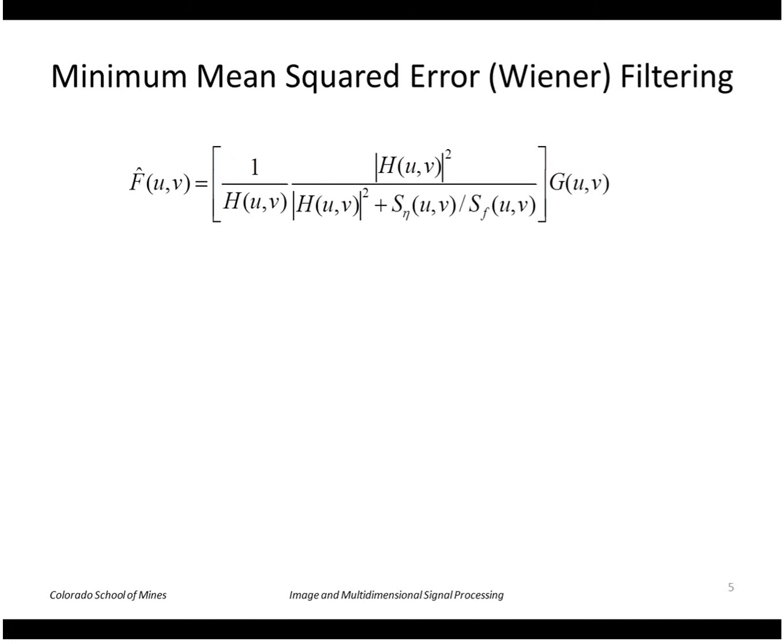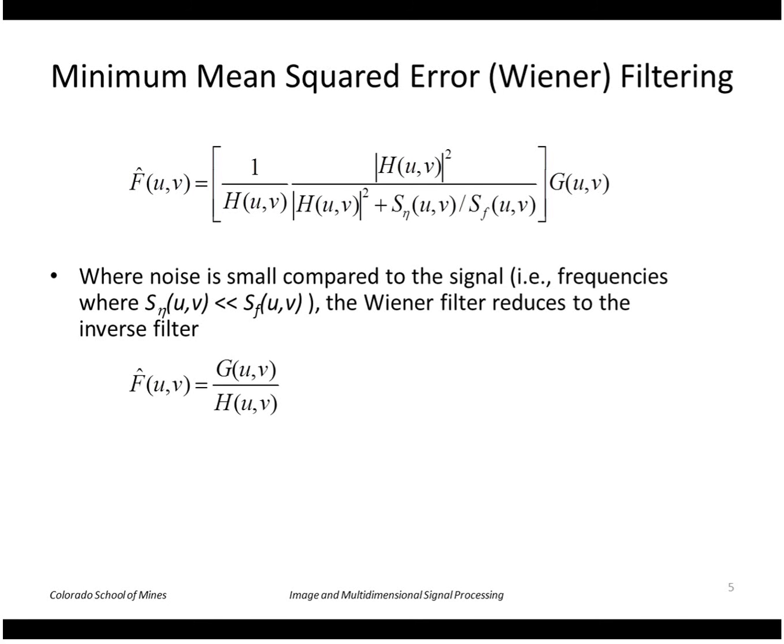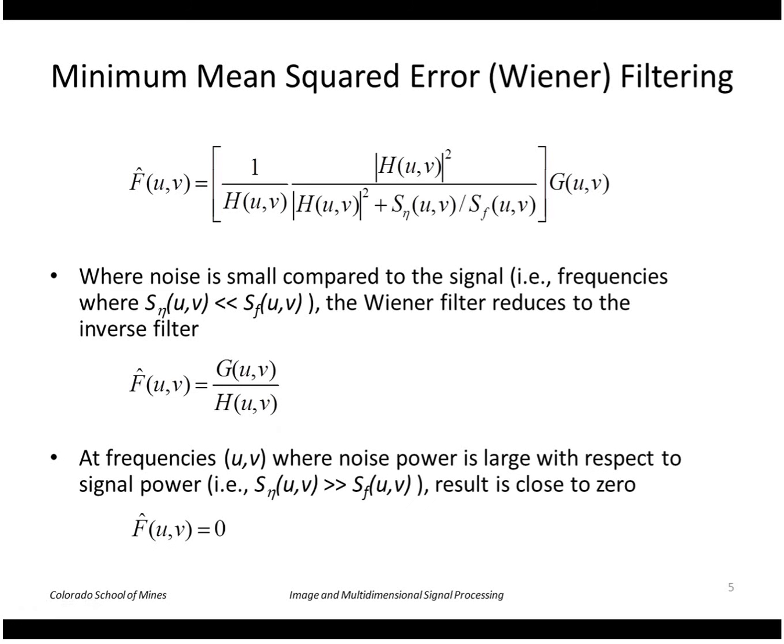Here is the expression for the Wiener filter. Let's look at a couple of special cases. Where the noise is small compared to the signal, namely the ratio S sub eta over S sub f is close to zero, it reduces to the straightforward inverse filter where we just divide g by h. In cases at frequencies where the noise is large with respect to the signal, so S sub eta is much larger than S sub f, the denominator gets very large and the whole Wiener filter approaches zero. Essentially, we're attenuating the output wherever the frequency is dominated by noise.